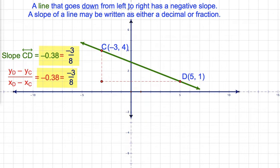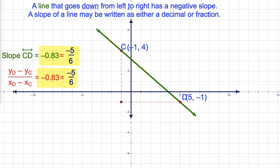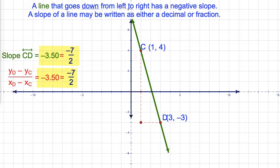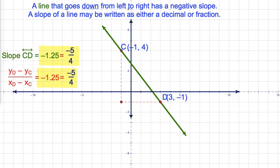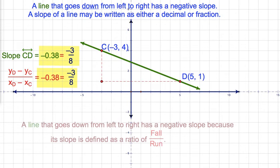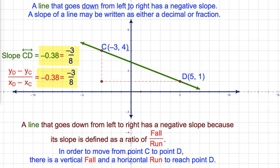A line that goes down from left to right has a negative slope. The slope of a line may be written as either a decimal or fraction. A line that goes down from left to right has a negative slope because its slope is defined as a ratio of fall to run — a vertical fall and a horizontal run to reach point D.